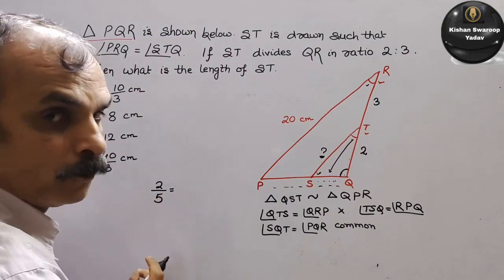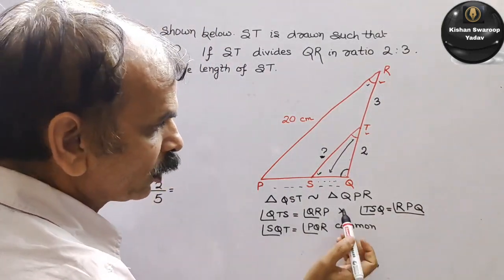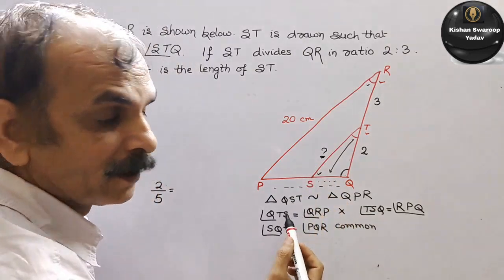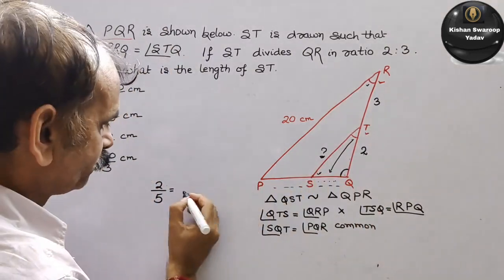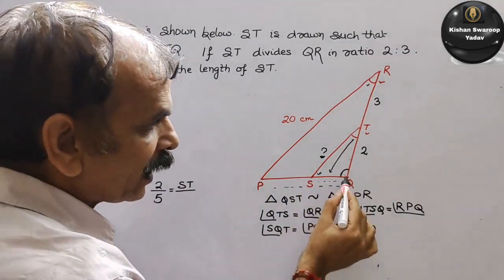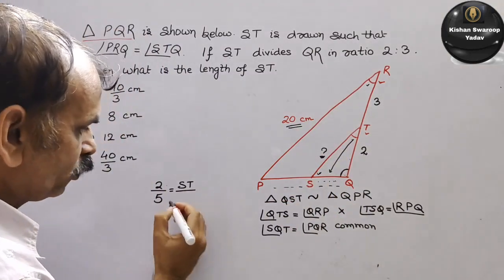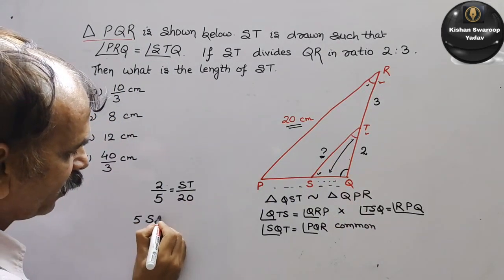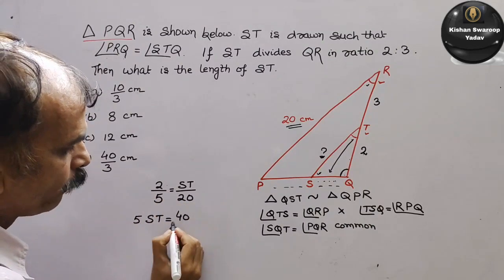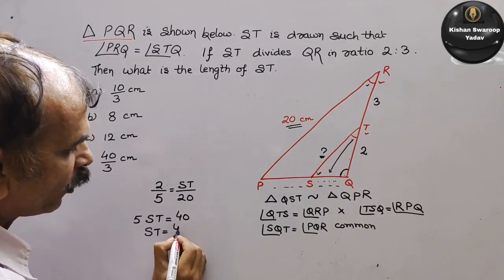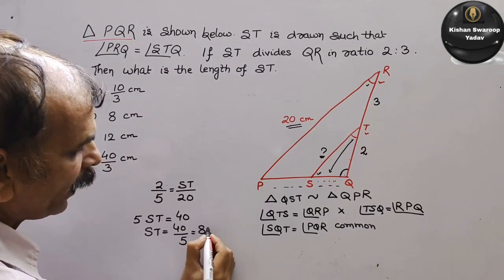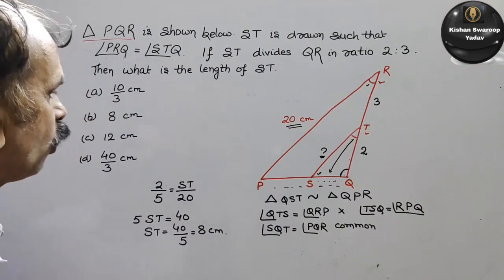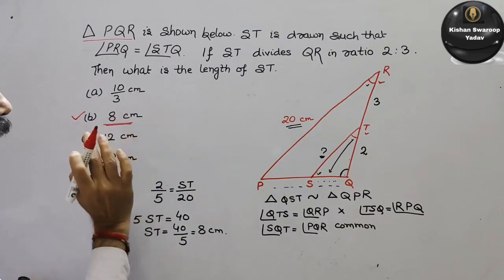Is equal to — aur yeh wala Q dono mein same hai, toh chote wale ka pehle lena hai. Q ka opposite side mein question mark hai, toh yahan likhenge ST. Aur bade wale mein iske opposite kya hai — 20 cm. Toh yahan 20. Cross multiply karo: 5 ST is equal to 2 into 20 is 40. Toh ST aapka ho gaya 40 by 5, that is equal to 8 cm. Toh aapka ST 8 cm ka hai. Toh 8 kahan par likha hai — D option mein. Toh yeh answer aapka correct hai.